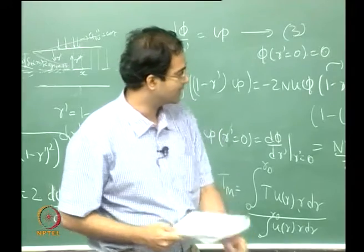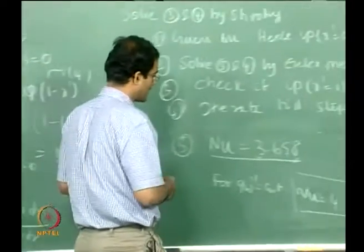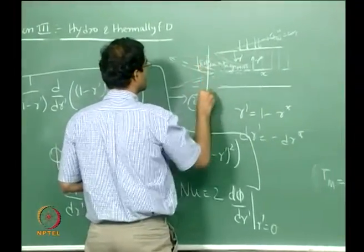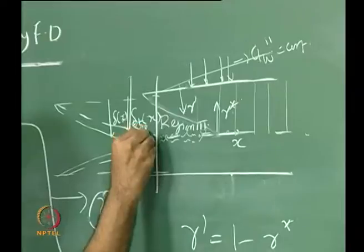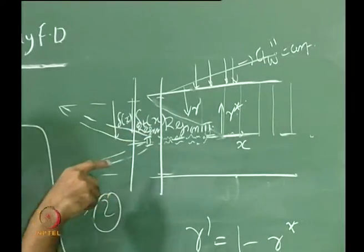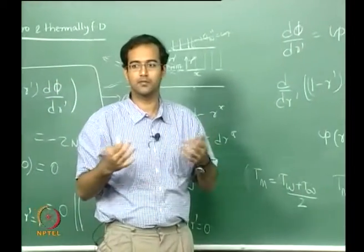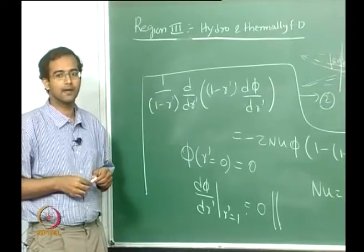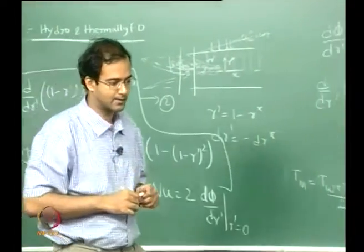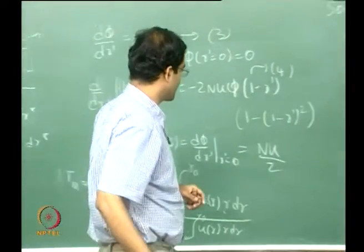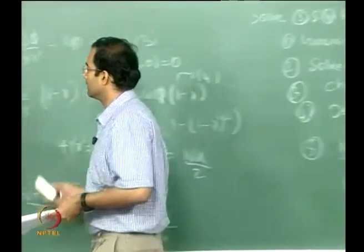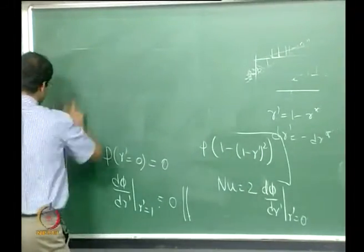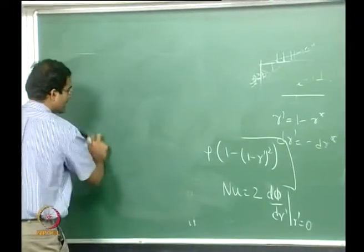Now we move from region 3 to region 2 — the thermal entry length region. In region 3 we looked at constant wall temperature and constant heat flux for the fully developed case. Region 2 is where the flow is hydrodynamically fully developed but the thermal boundary layers have not yet merged. You cannot say d(phi)/dX equals zero; only du/dX equals zero. This is a more interesting region, and we will focus the next three to four classes on it.